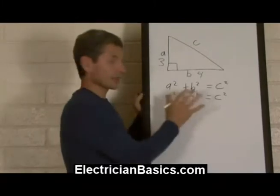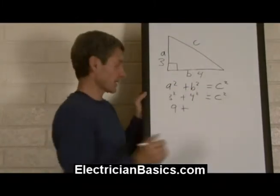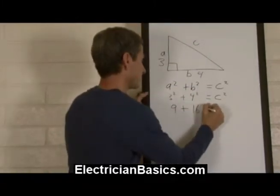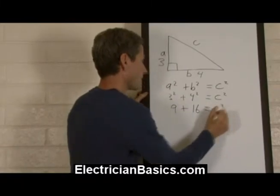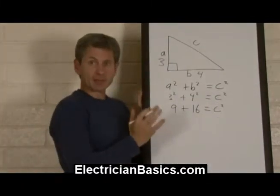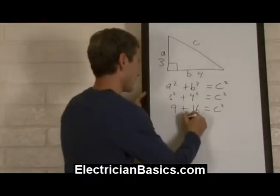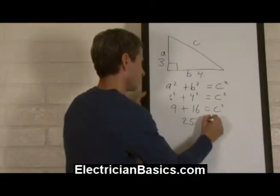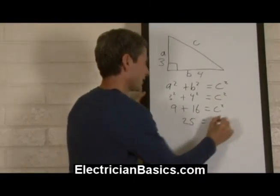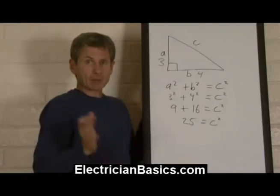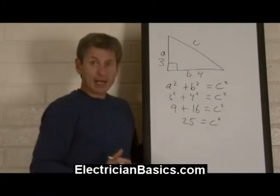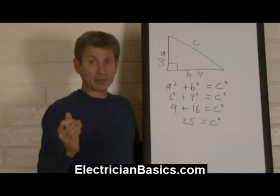Plus 4 squared—4 times 4 is 16—equals c squared. So 9 plus 16 equals 25, and that equals c squared. So what's the square root of 25? Well, 5 times 5 equals 25.